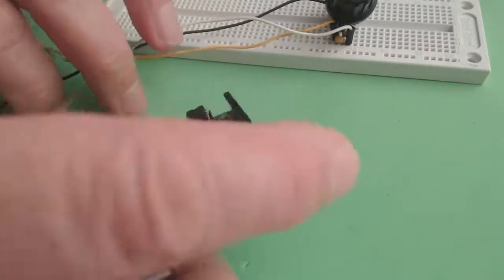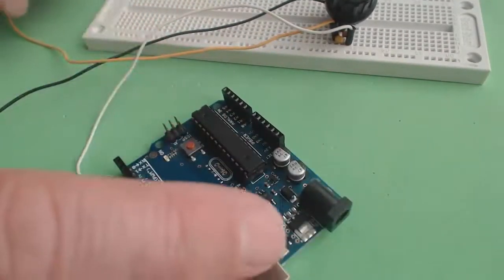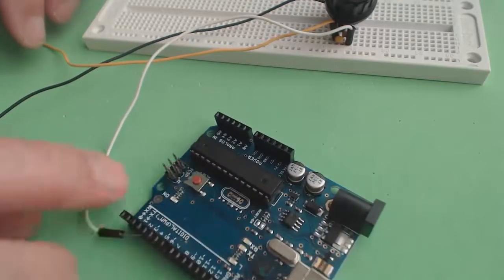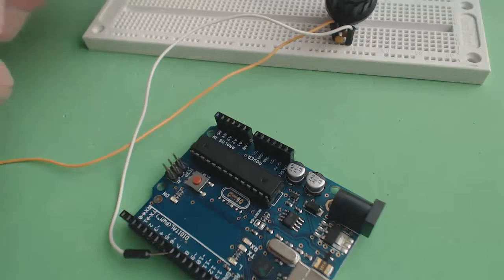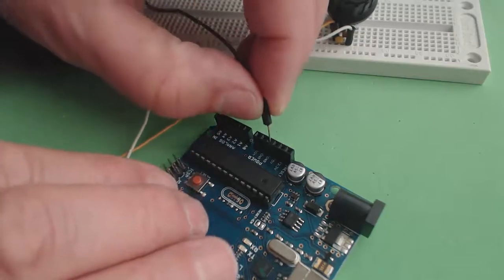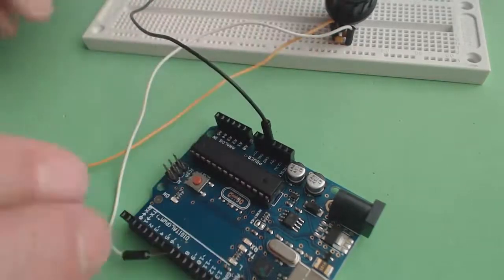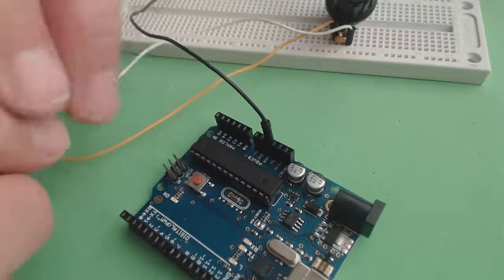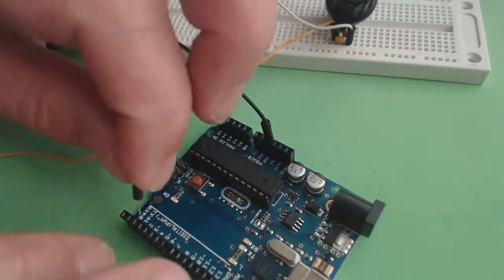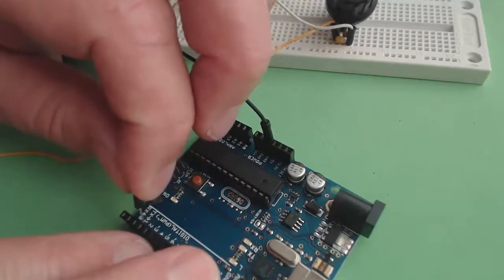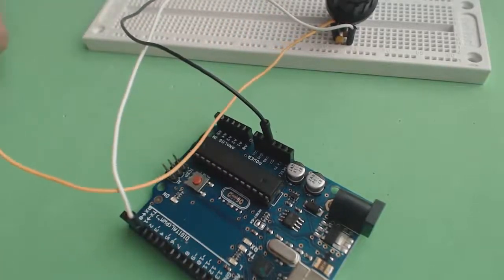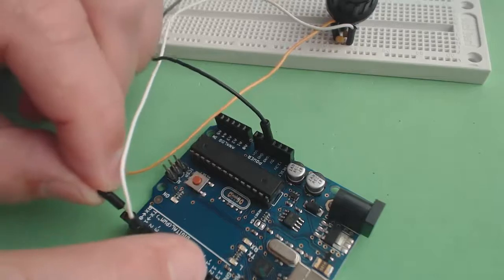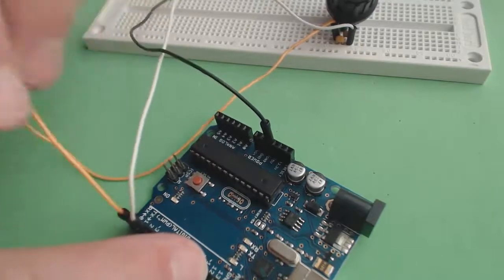Now let's hook up my pet Arduino. First I'll hook the black lead up to ground. Now I'm going to hook the white lead up to digital pin 3. And finally, the orange lead gets hooked into digital pin 2.